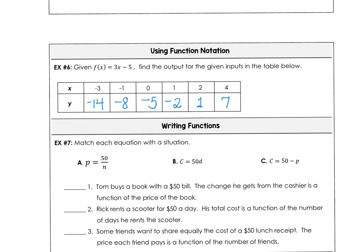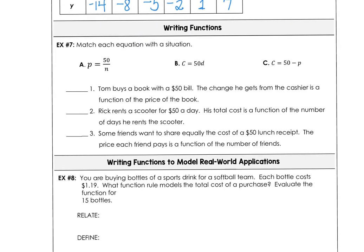In example 7, you want to match each equation with the situation. So let's assume Tom buys a book with a $50 bill. And the change he gets from the cashier is a function of the price of the book. So that looks like letter C to me. We're buying the book for $50 and we're giving the cashier $50 and we're subtracting the price of the book.